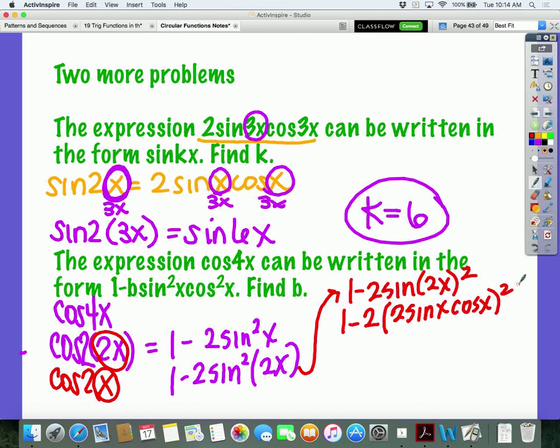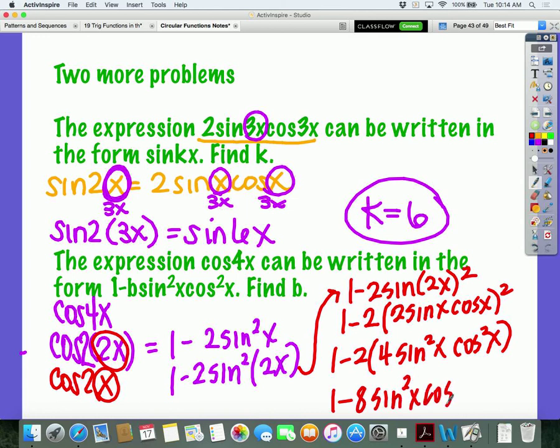No, we don't have to foil or factor any of this. We're just going to square everything that's in the parenthesis. So, when we square 2, we get 4. When we square sine x, we get sine squared x. And when we square cosine, we get cosine squared x. And the last thing we'll have to do is distribute the 2. So, what is the value of B? 8.